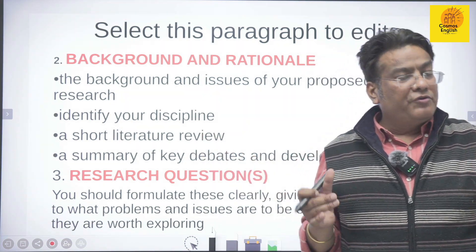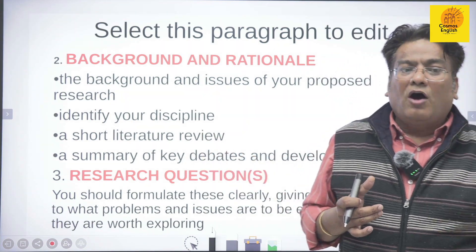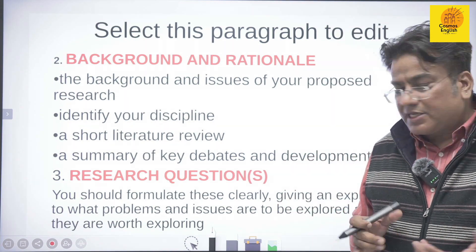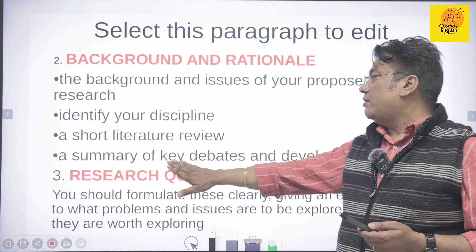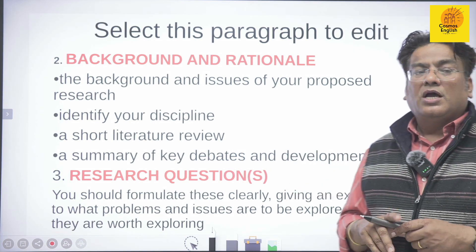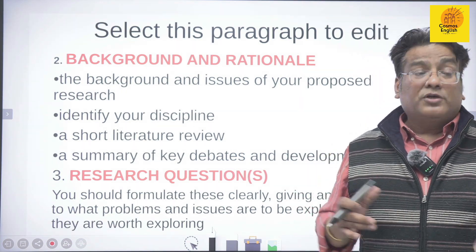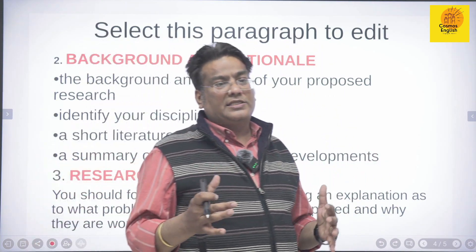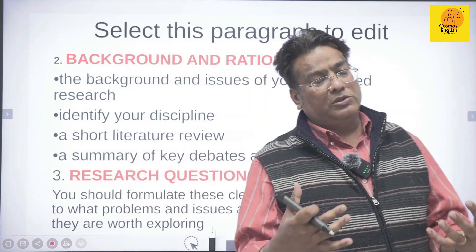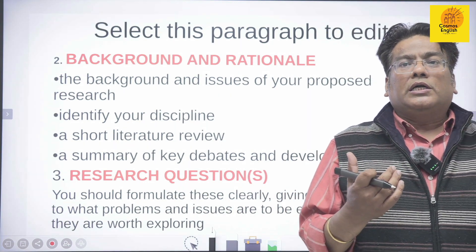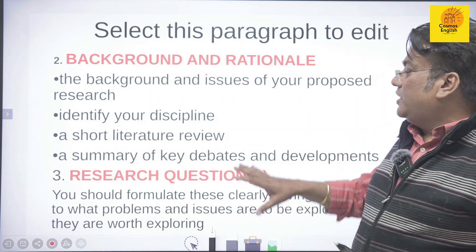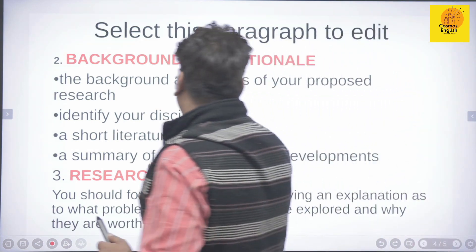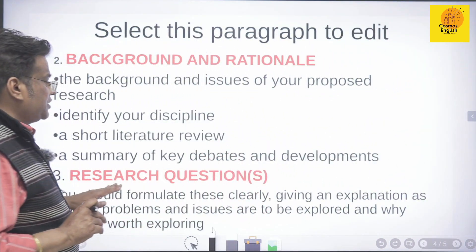A short literature review should be included — what have you read, what has already been written, how many books on criticism exist, who the famous critics are. You should mention them. Then provide a summary of the key debates and developments, because when you present your proposal before the DRC meeting, you are proposing to those intellectuals that you will do work where these writers or critics have left things unfinished.